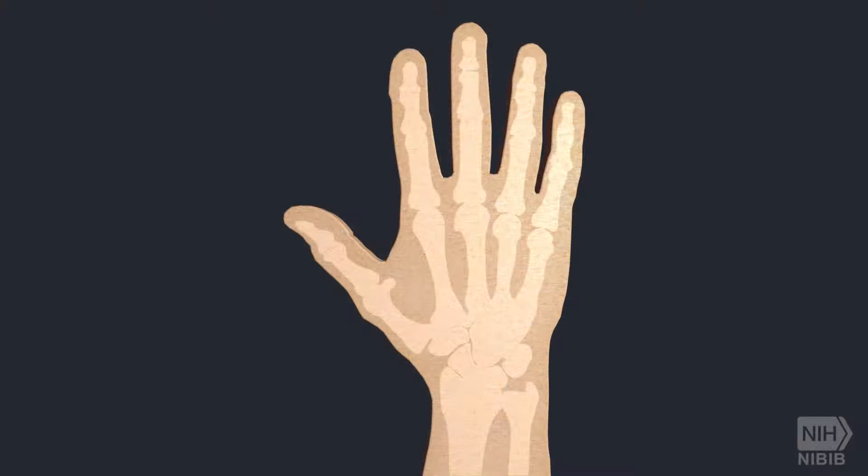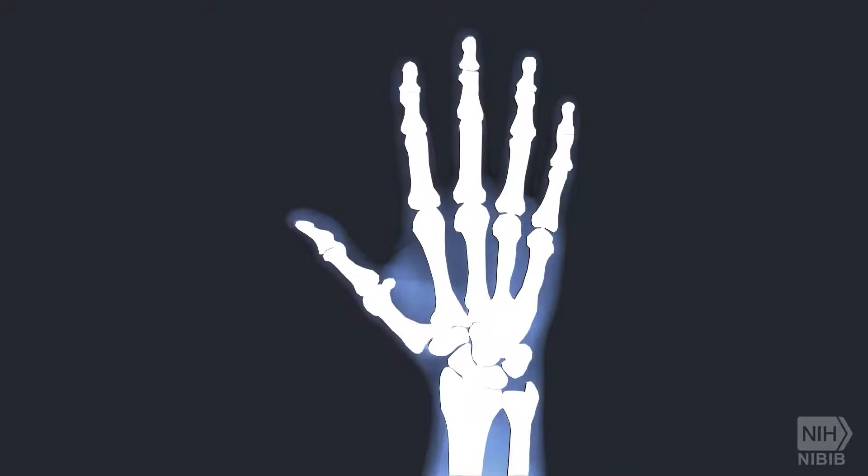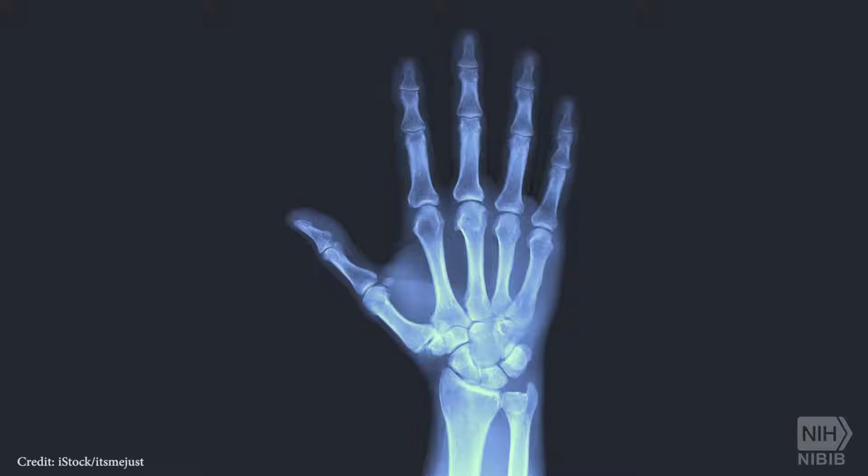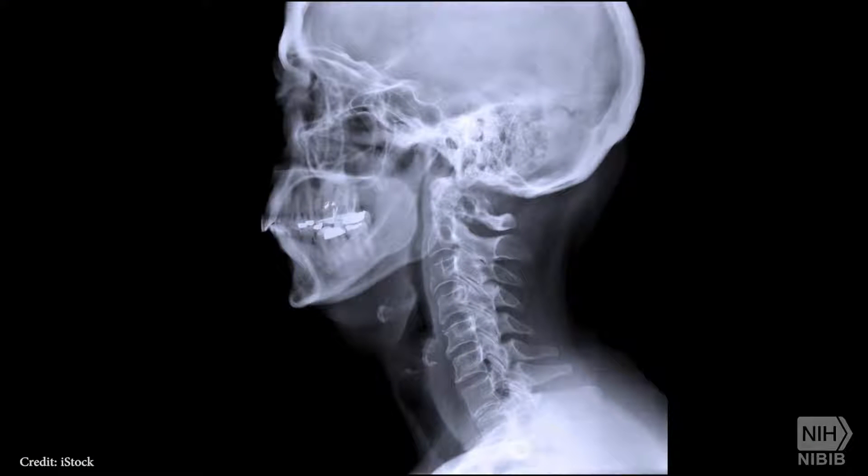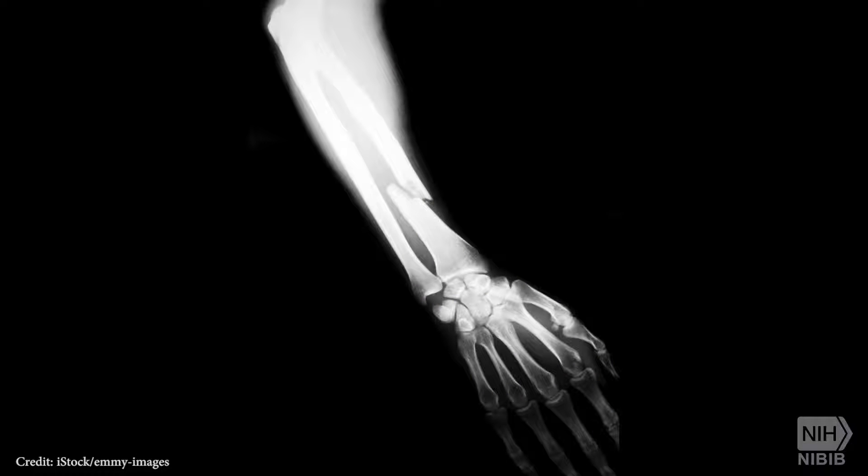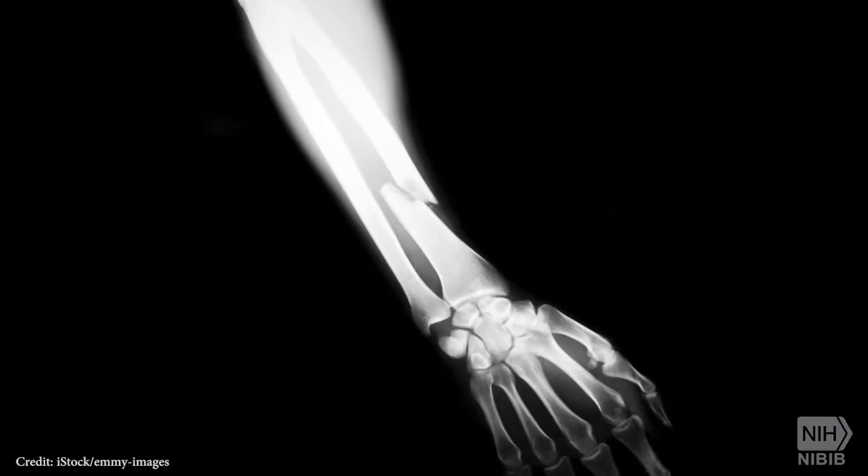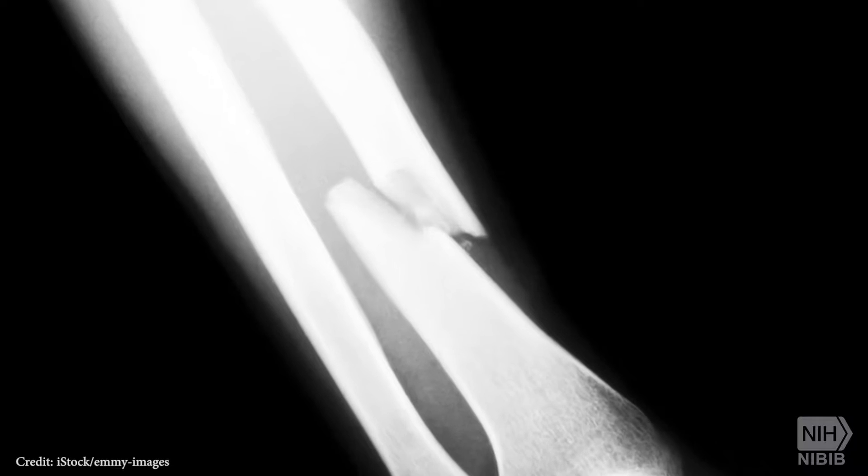x-rays directed at the body produce shadows on the opposite side that can be registered on film or on a digital sensor, so that bones are clearly visible while soft tissues, such as muscle, are shadowy. As a result, the two-dimensional images formed by the x-rays are quite useful in revealing structures within the body, and can easily display fractures in bones.